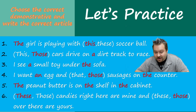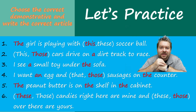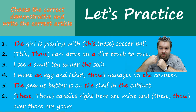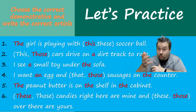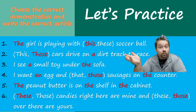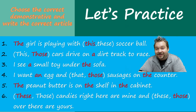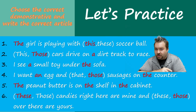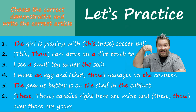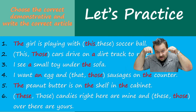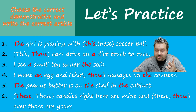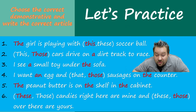Number three: 'I see a small toy under the sofa.' It's not specific - we don't know the color, size, or shape - so it's A small toy. But we know where the sofa is because we can see something under it, so it's The sofa. Number four: 'I want an egg' - first time mentioning egg, so An egg.